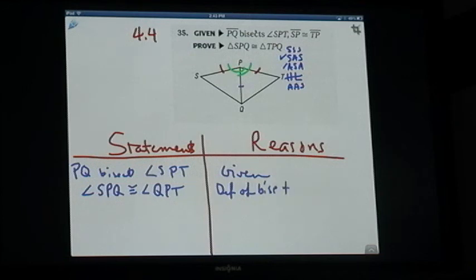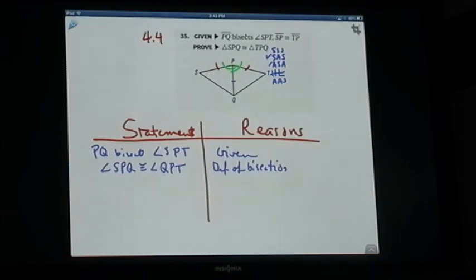You can only say something's given if it says it in so many words. That's bisection, definition of bisection. Then we have also given is SP is congruent to TP. And that is given. And we marked it.